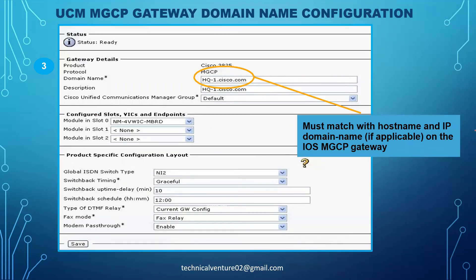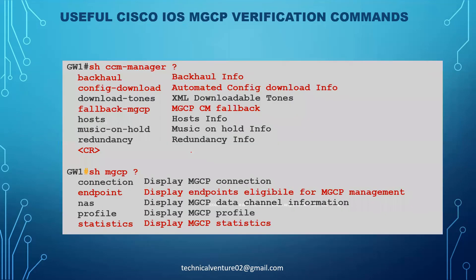The domain name on CUCM must match the hostname and IP domain name on the IOS MGCP gateway — in our case 'GW1'. Once you choose the module in slot zero, you get the subunit option and can configure the interface. Important verification commands include: 'show ccm-manager config-download', 'show ccm-manager fallback mgcp', 'show ccm-manager backhaul', 'show ccm-manager redundancy', and 'show ccm-manager music-on-hold'. You can also use 'show mgcp endpoints' to display all endpoints eligible for MGCP management, and 'show mgcp stats' for MGCP statistics.